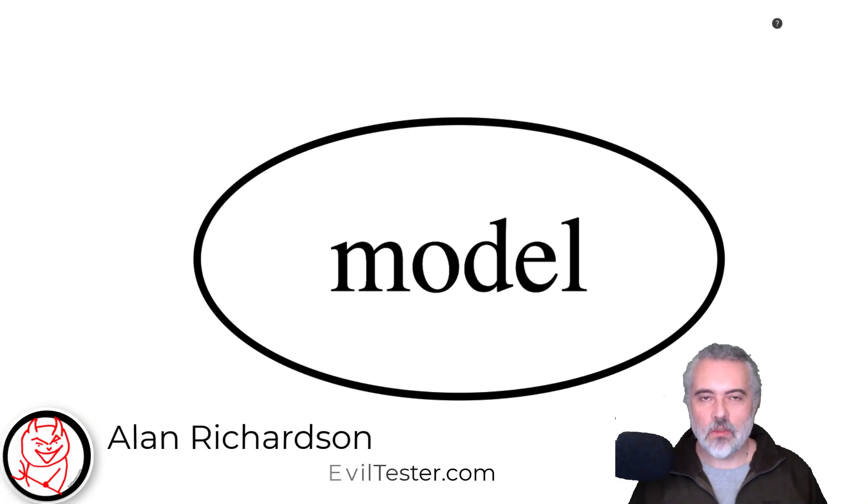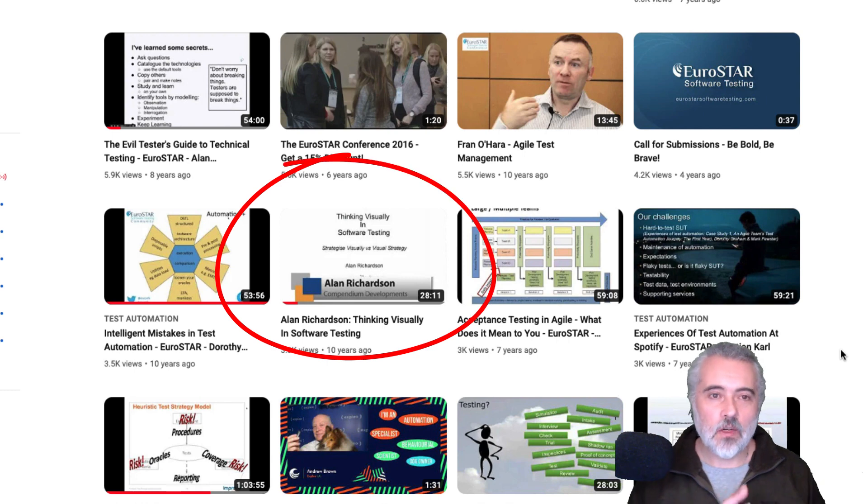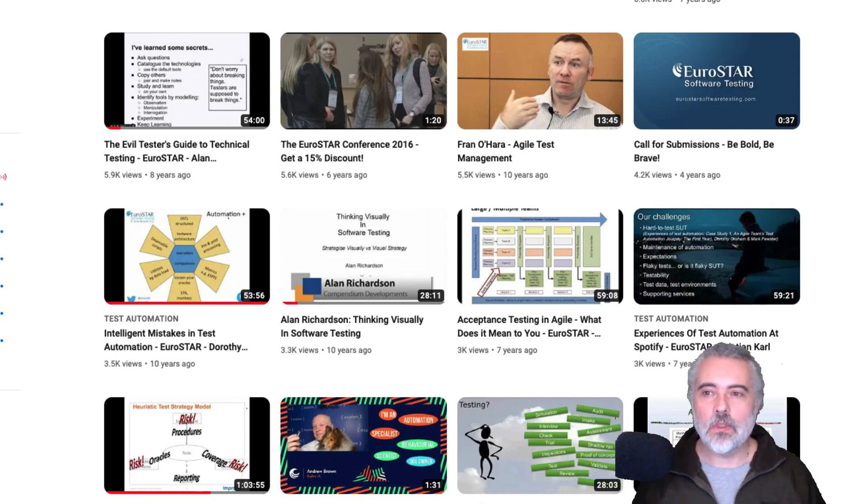One of the most important skills that we have to develop as software testers is modeling. That doesn't mean posing and taking photographs. That means creating representations of the world, creating partial representations of the world, incomplete representations. Representations are good enough to allow us to do something and achieve some results and some value. Now I've spoken before about visual models for software testing and how we can model the systems, how we can model our coverage. You can find that in the Eurostar conferences video list.